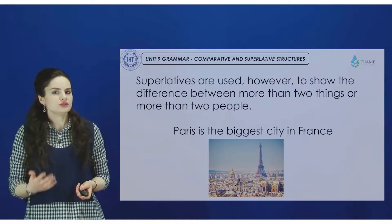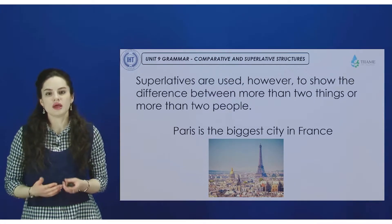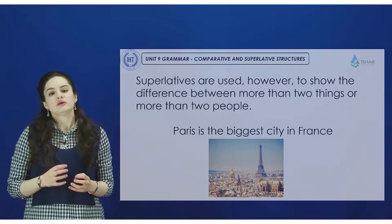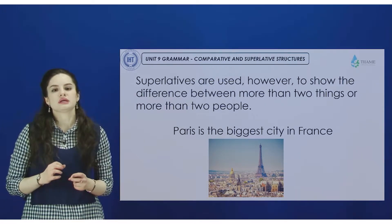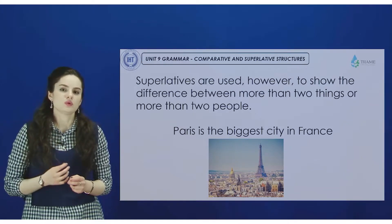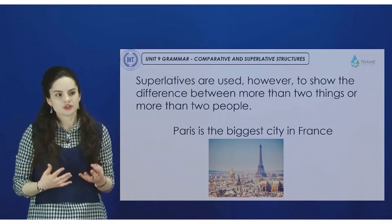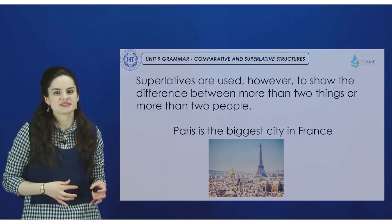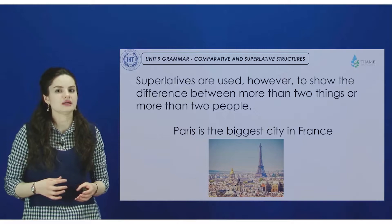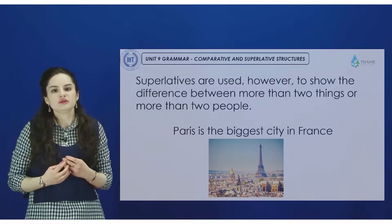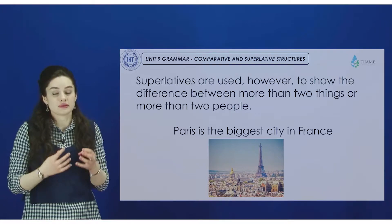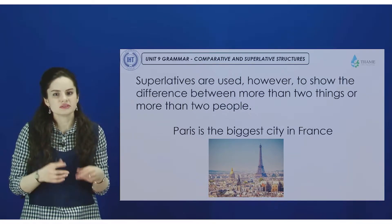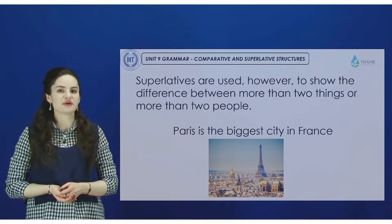When we talk about the superlative form, we talk about the most — the one form which is separate, which is not similar to others. For example, 'Paris is the biggest city in France.' You'd like to emphasize one city, no other city like Paris. So you would like to underline this fact. Here is the superlative form of an adjective.